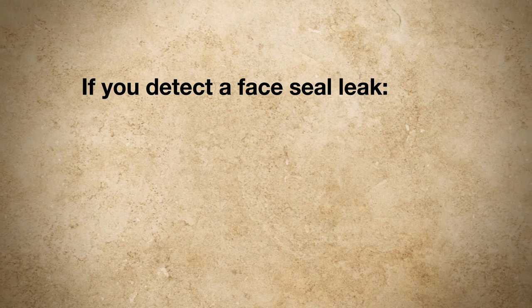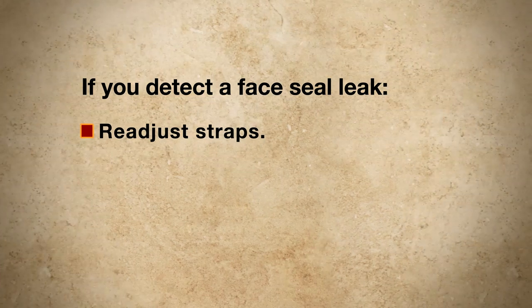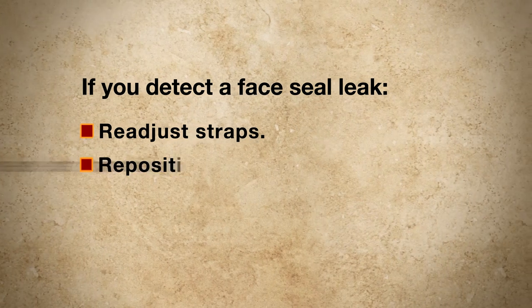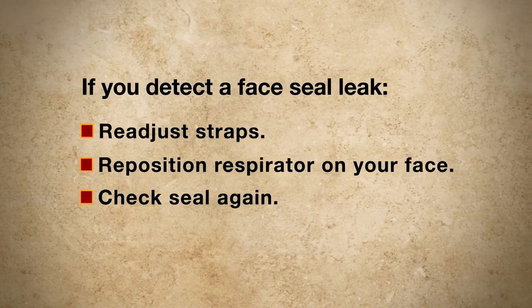Next, perform a positive pressure user seal check. Place the palm of your hand over the exhalation valve outlet. Exhale gently and hold your breath to create and maintain a slight positive pressure inside the face piece. If the face piece bulges slightly and no air leaks are detected between your face and the face piece, you have passed the positive pressure seal check. If you detect a face seal leak, readjust the straps and reposition the respirator on your face. After adjusting the respirator, you should check the seal again. Next, perform a negative pressure seal check. Cover the respirator cartridges or filters with the palms of your hands and inhale gently. If you feel the face piece collapse and pull closer to your face with no leaks between your face and the face piece, you have passed the negative pressure seal check. If you detect air leakage, readjust the straps and reposition the respirator on your face. After adjusting the respirator, you should check the seal again.